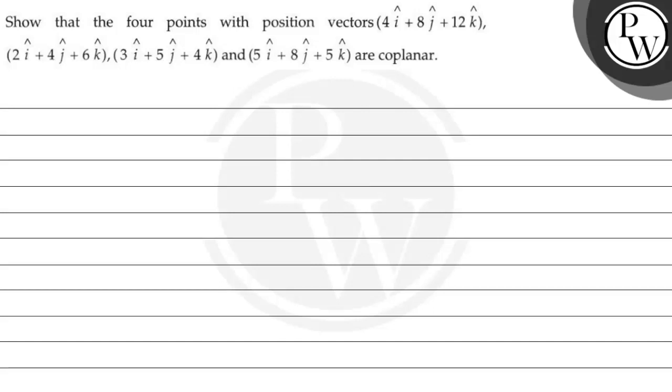Hello, Bacho. Let's read this question. The question says, show that the four points with position vectors (4i + 8j + 12k), (2i + 4j + 6k), (3i + 5j + 4k), and (5i + 8j + 5k) are coplanar.